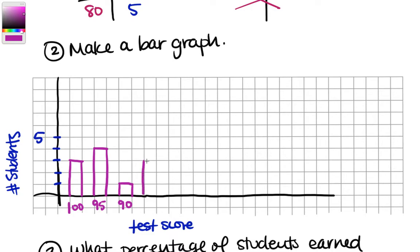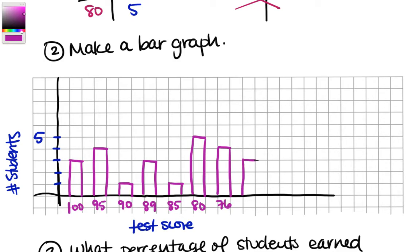Three scored 89, one scored 85, five scored 80 — so this bar goes all the way up. Four scored 76, three scored 68, two scored 50, and one scored 40. We've got every test score represented, and the height shows how many students got that score. Now we've got a really easy to interpret visual representation of this data, and we can see where the most frequent scores occurred.